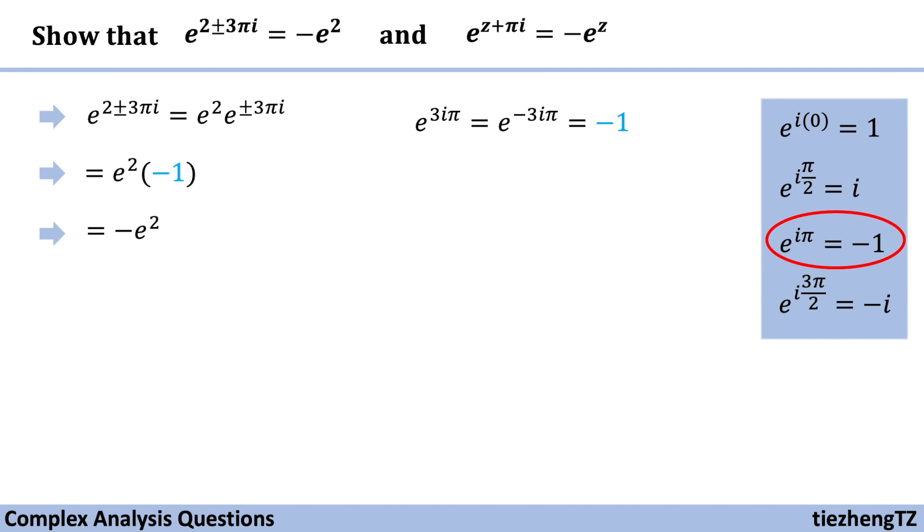Now let's take a look at the second one. Likewise, we can change e to the power of z plus pi i to e to the power of z times e to the power of pi i.